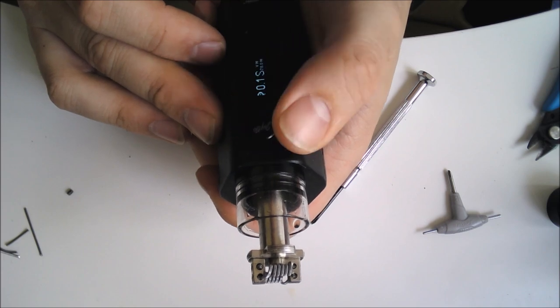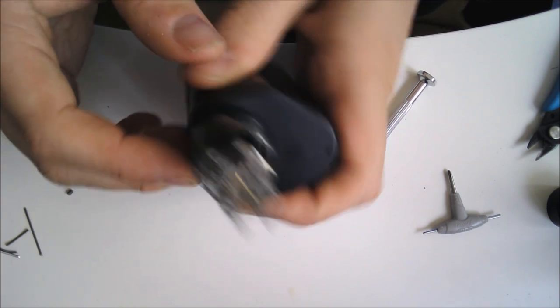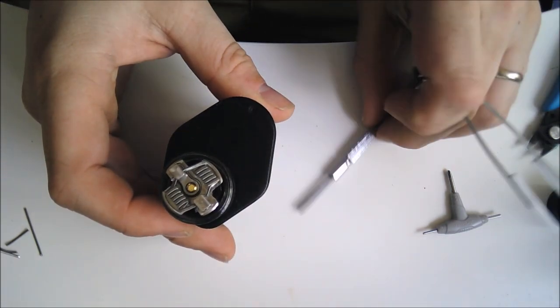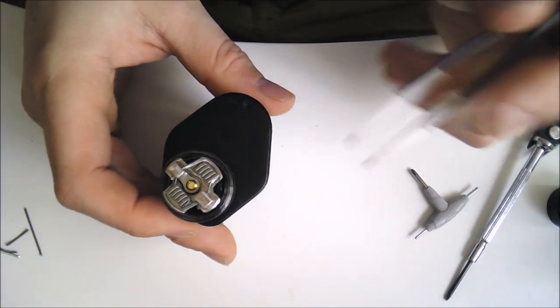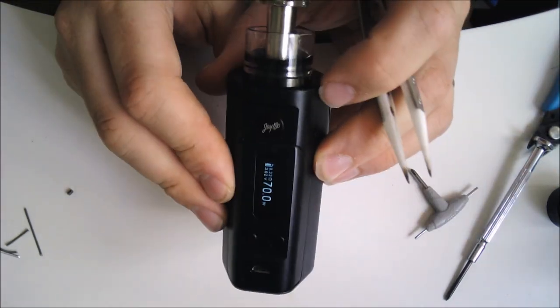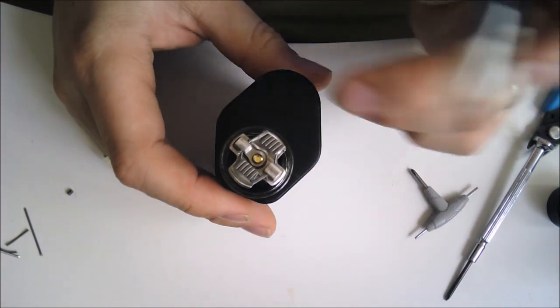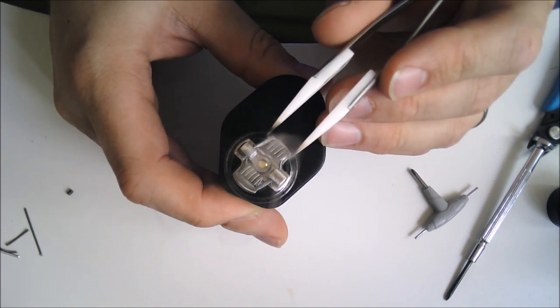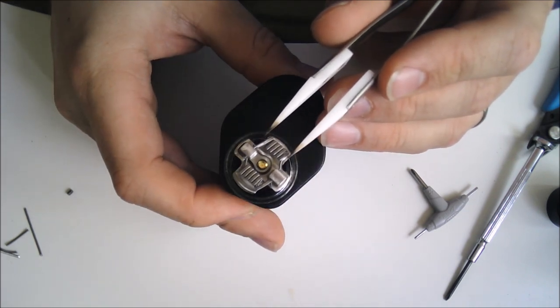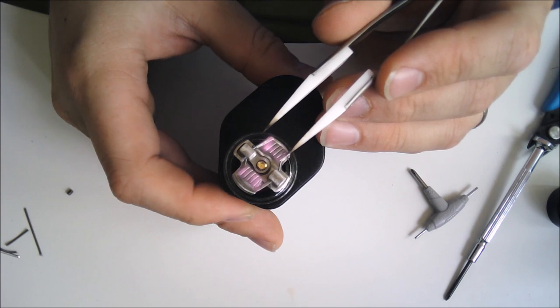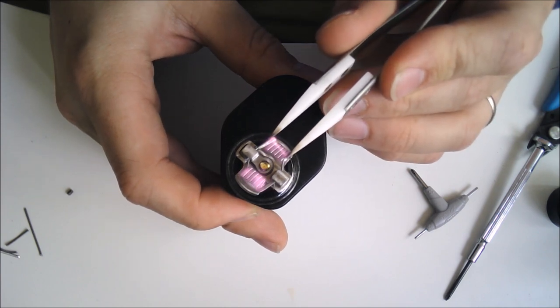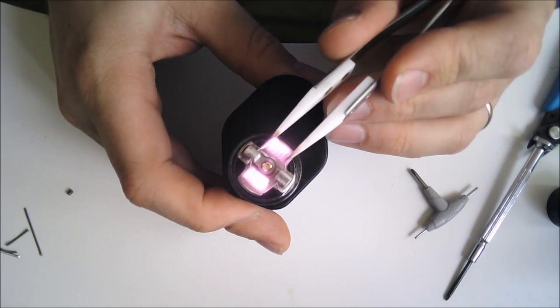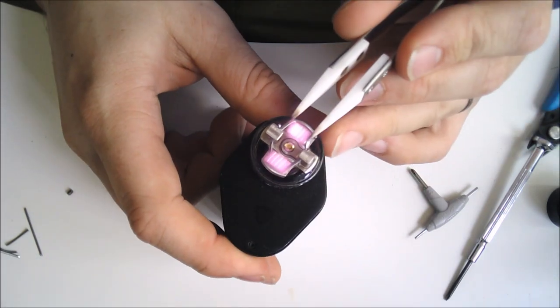Now what we want to do is turn the device on, put it into wattage mode. This is so far reading at 0.22, which is probably just about where we want it to be. What we'll do now is take our ceramic tweezers, give it a quick fire. You can see that the coils are starting to glow. It's starting to glow quite a lot actually.